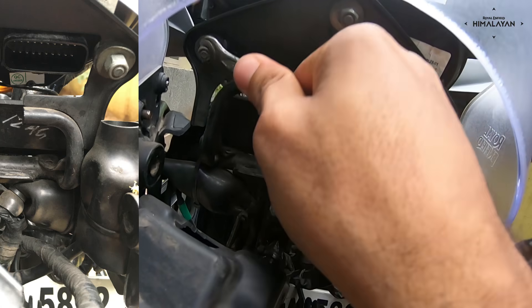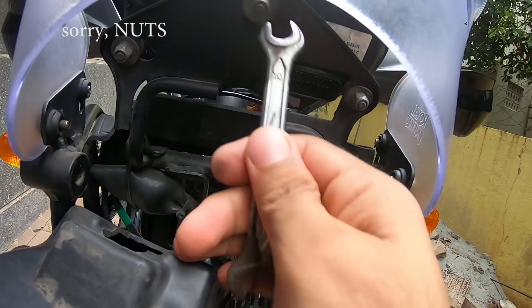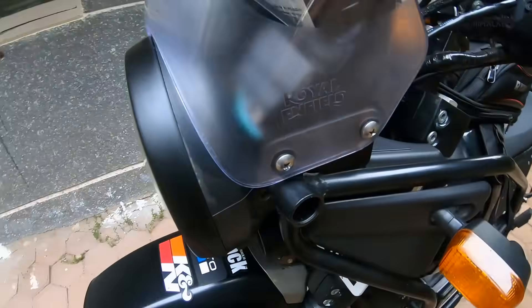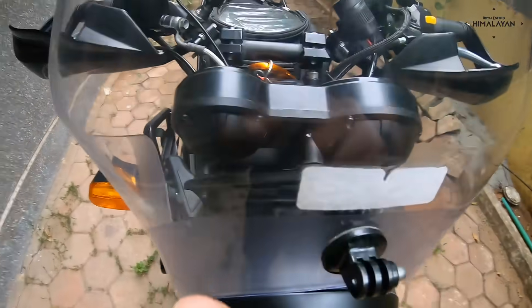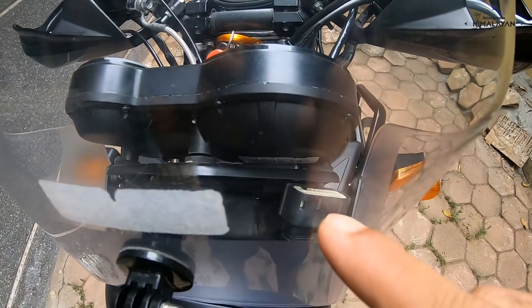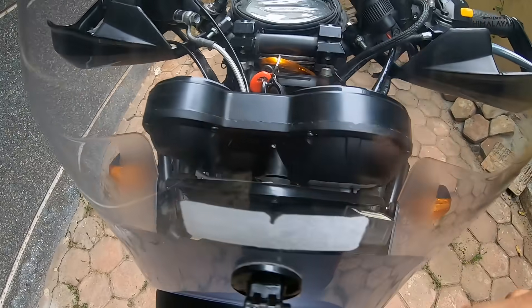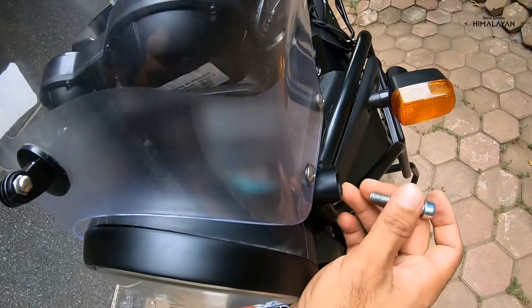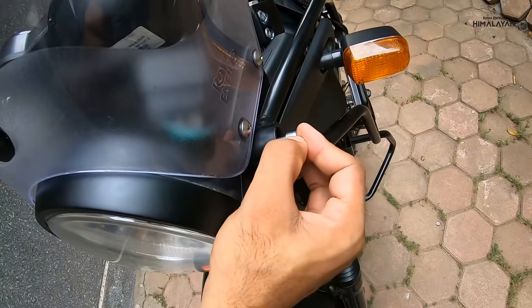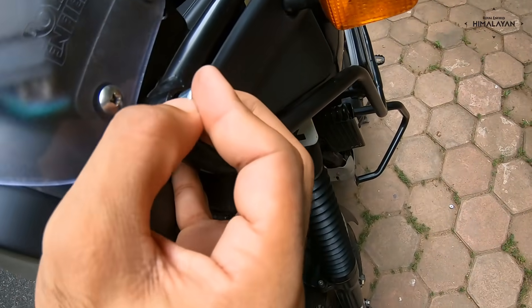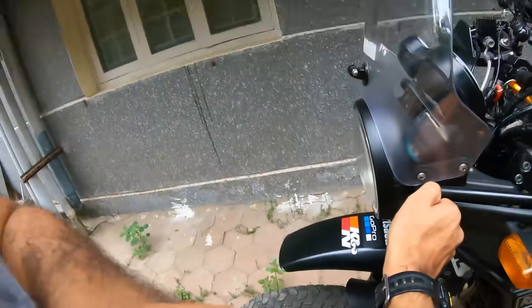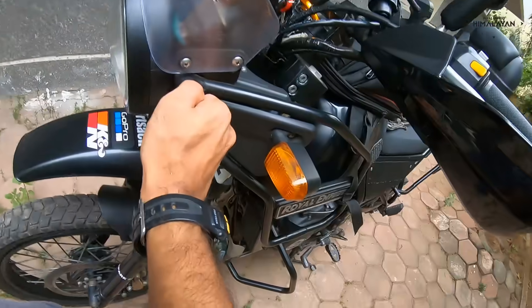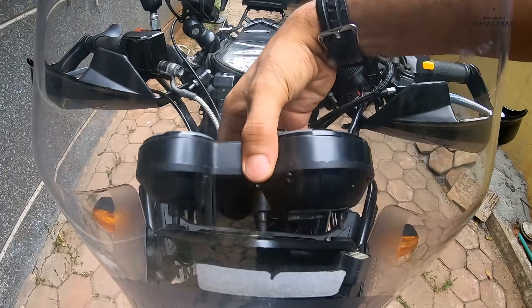The rest is just the 10mm bolts that come off. Now because you don't need the headlamp for the time being, once you've unplugged this adapter and removed all three nuts, what's left to be done is put back the headlamp assembly and just fasten it temporarily because you don't want it hanging around. And then the speedo console comes out like that.